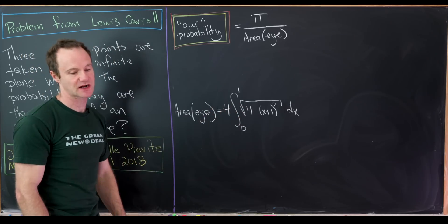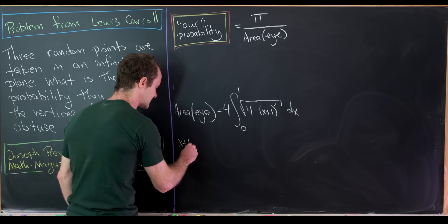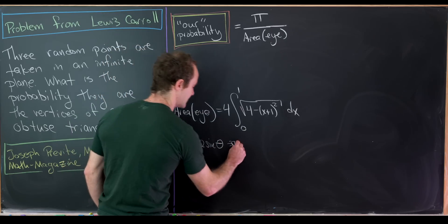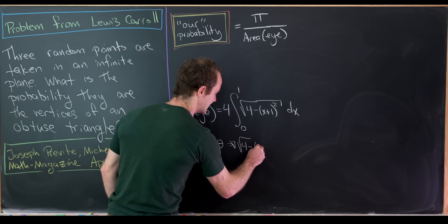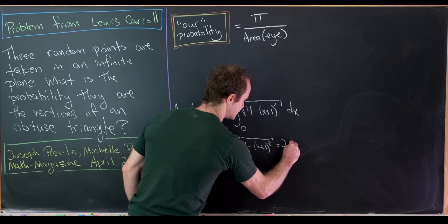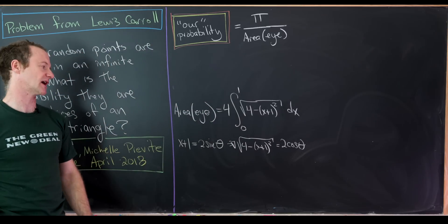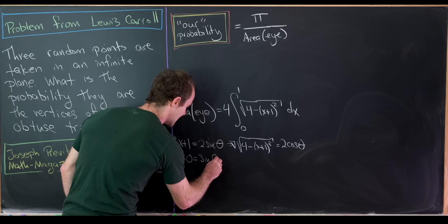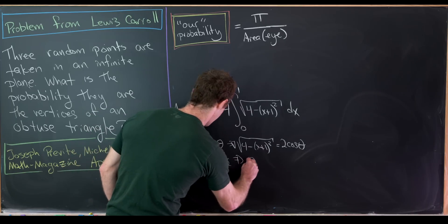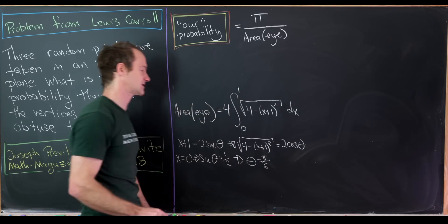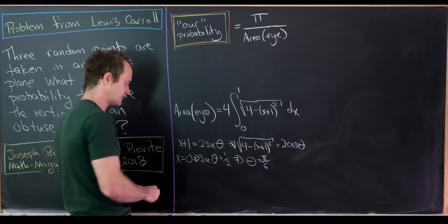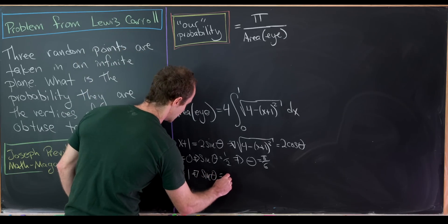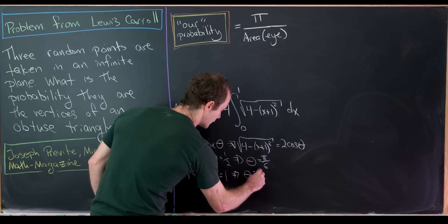And now we'll complete this with trigonometric substitution. So the substitution we'll make is x + 1 equals 2 times the sine of theta. Notice that means that the square root of 4 minus (x + 1)² is, in fact, 2 times cosine theta by the Pythagorean trig identity. So let's also notice when x is equal to 0, we see that sine of theta is equal to 1 half, which means that theta equals pi over 6. So that's how our bound of integration will change.